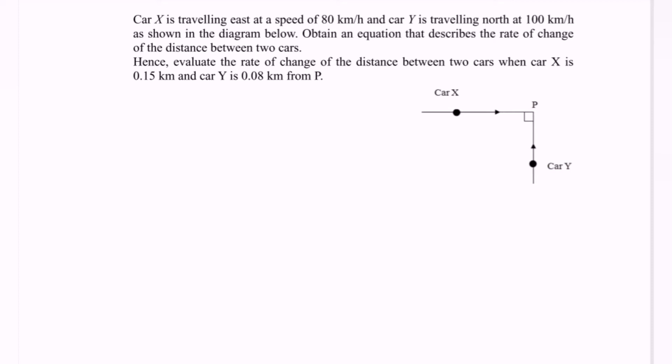Given: car X is traveling east at the speed of 80 km per hour. So here we have car X traveling to the east and we can write dx/dt equals 80. And car Y is traveling north at 100 km per hour, so we have car Y traveling north. We can write dy/dt equals 100.